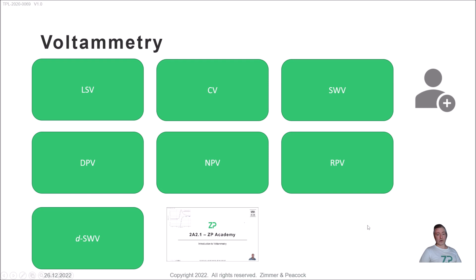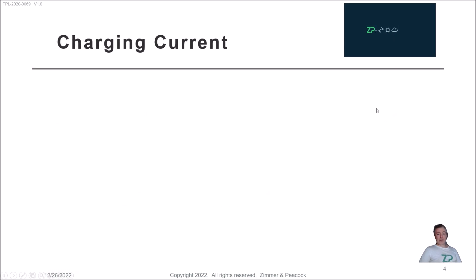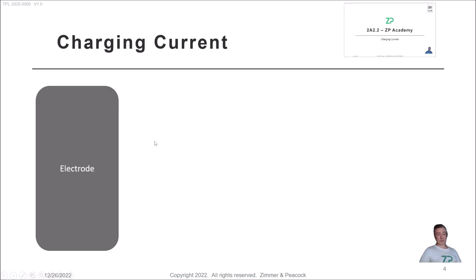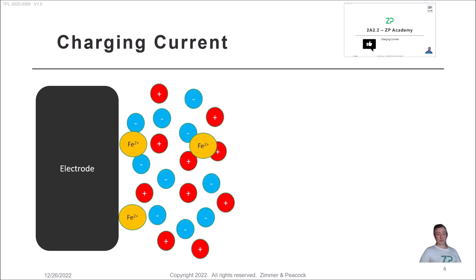We have touched upon linear sweep voltammetry and cyclic voltammetry in previous videos. Today I want to focus more on DPV, NPV, and SWV. Now, why do these pulse methods of voltammetry exist? They exist because they're really trying to overcome a problem that academic electrochemists perceived: when doing electroanalytical chemistry, we have an electrode sitting in a solution.